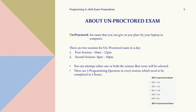The unproctored programming exam is conducted online and is available in two sessions: the first session from 10 a.m. to 12 p.m., and the second session from 8 p.m. to 10 p.m. You have the option to attempt either one or both sessions, and your best score will be taken into consideration. Each session consists of five programming questions to be completed within a time frame of two hours. Make sure you're aware of the exam guidelines before attempting it, as you must maintain academic integrity.